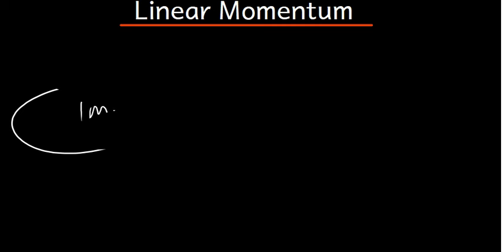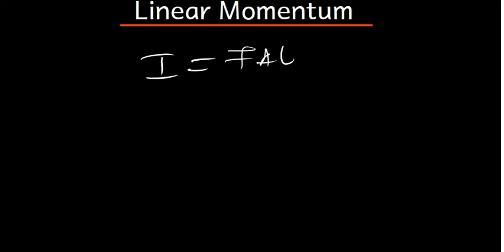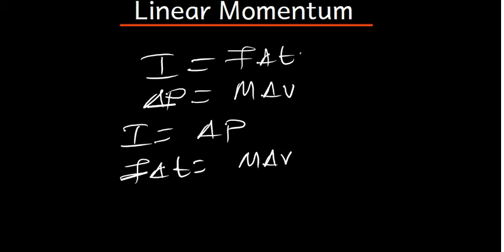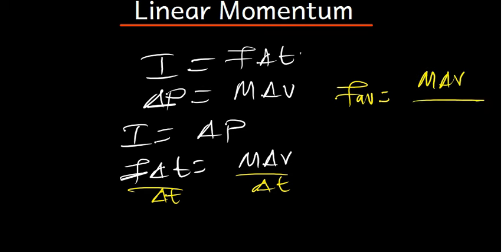Let's talk more about impulse first. Impulse, represented by the symbol I, is given by the force times the change in time. The change in momentum is the mass times the change in velocity. So we are saying that impulse is equal to the change in momentum, and if we divide both sides by the change in time, we can find the average force — which is mass times change in velocity, divided by the change in time.